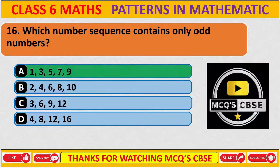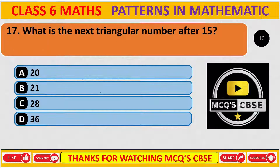Which number sequence contains only odd numbers? The correct answer is A: 1, 3, 5, 7, 9. These are all odd numbers.